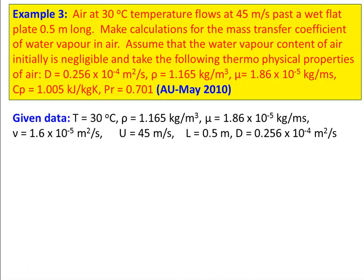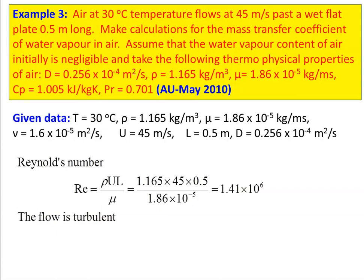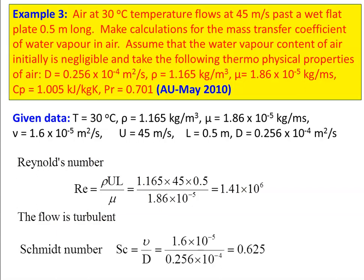Given data: T = 30°C, ρ = 1.165 kg/m³, absolute viscosity μ = 1.86 × 10⁻⁵ kg/(m·s), kinematic viscosity ν = μ/ρ = 1.6 × 10⁻⁵ m²/s, velocity u = 45 m/s, length L = 0.5 m, D = 0.256 × 10⁻⁴ m²/s. Reynolds number = ρuL/μ = 1.165 × 45 × 0.5 / (1.86 × 10⁻⁵) = 1.41 × 10⁶ — flow is turbulent. Schmidt number Sc = ν/D = 0.625.